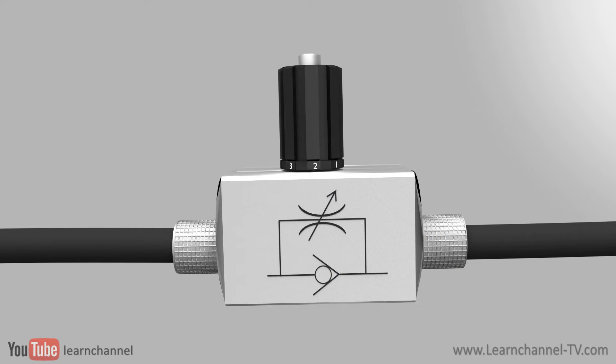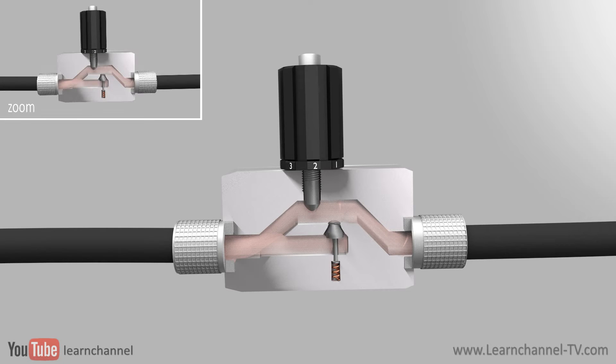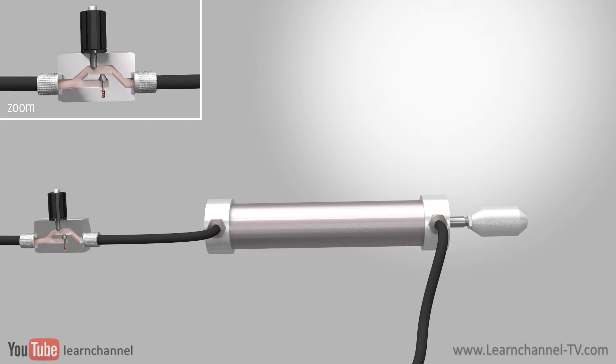The function of a flow valve is to reduce the rate of flow in its leg of the circuit. Flow reduction results in speed reduction at the actuator. For an example of an actuator, here is a cylinder. The check valve, which is often already included within the housing, acts like a bypass for the return flow when the direction of the volume flow is reversed.